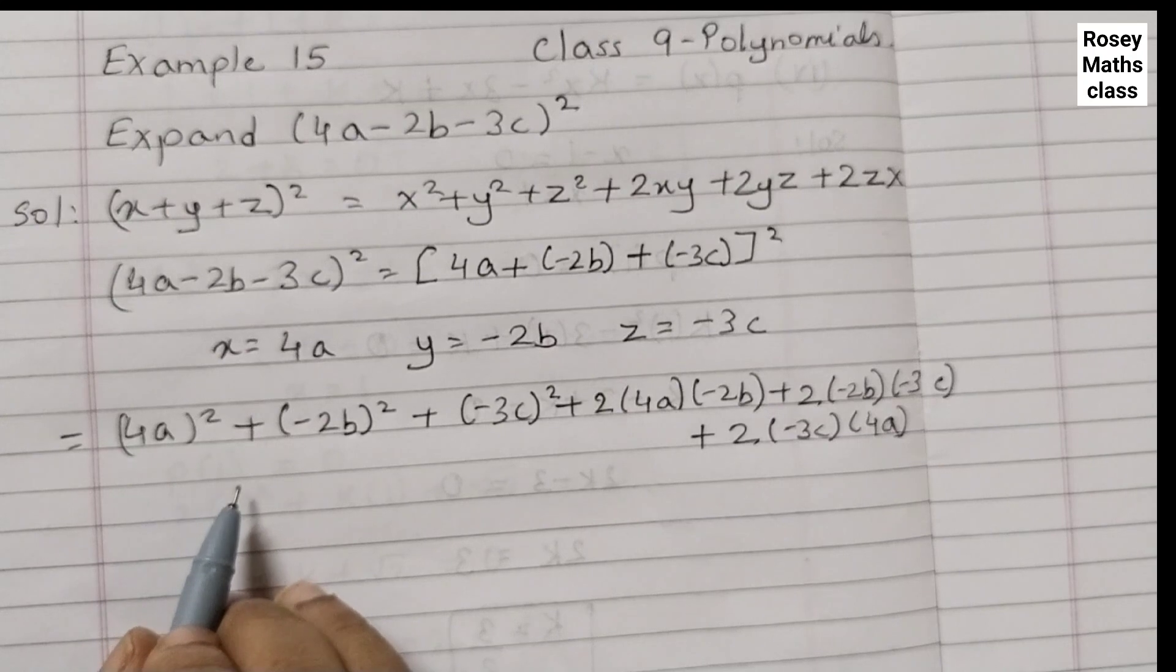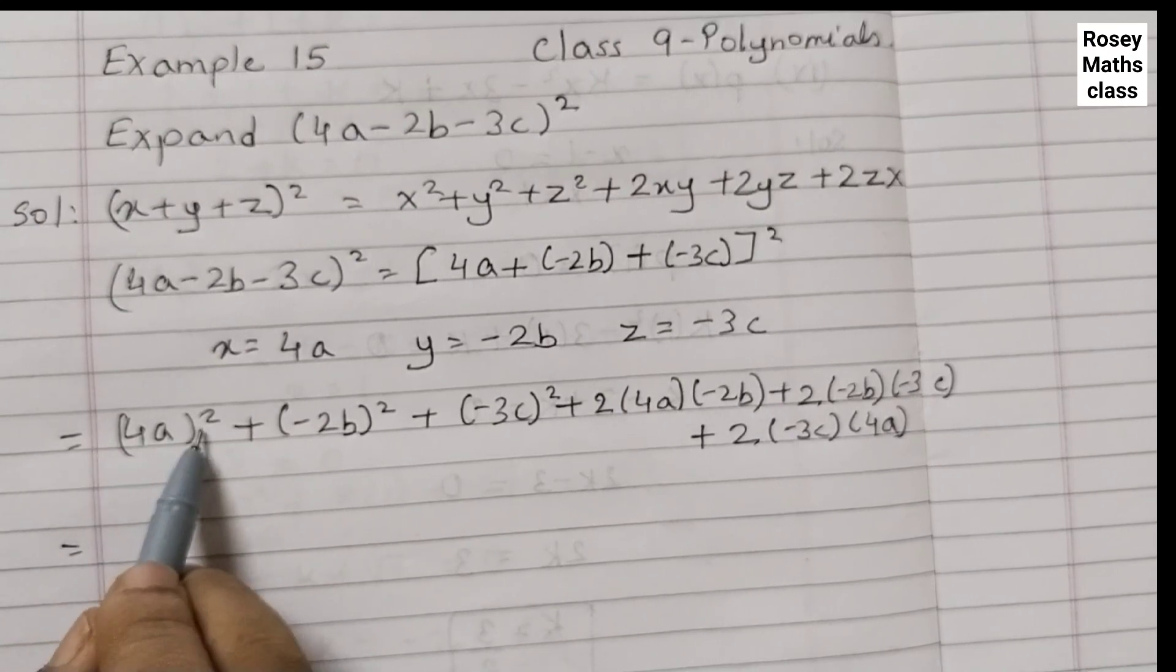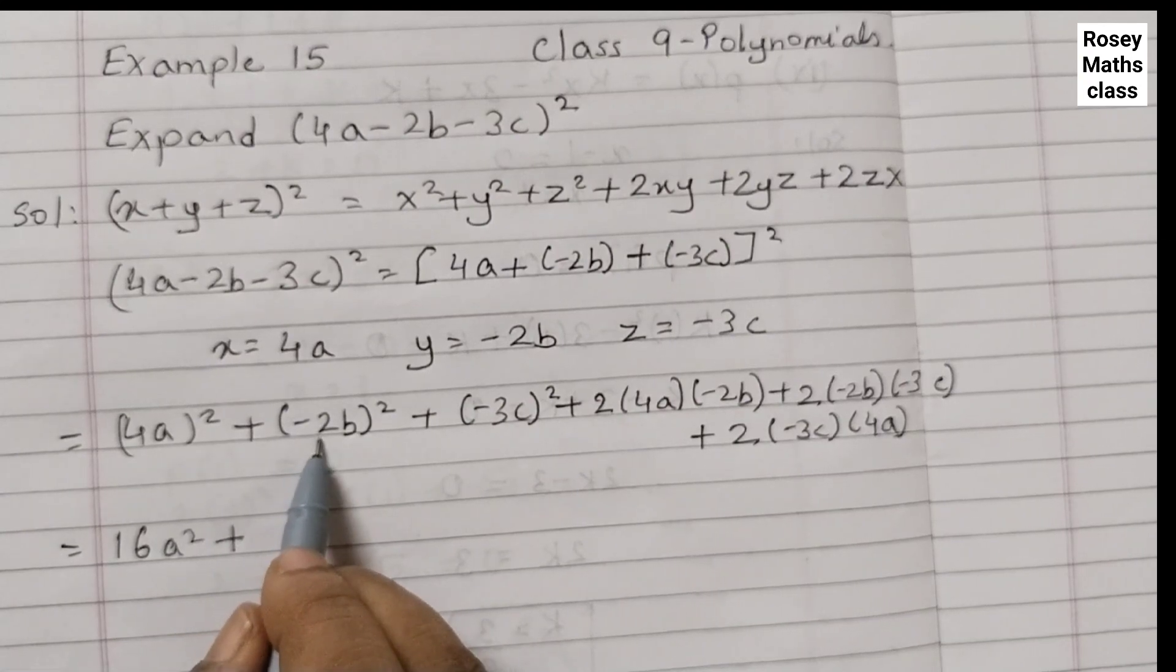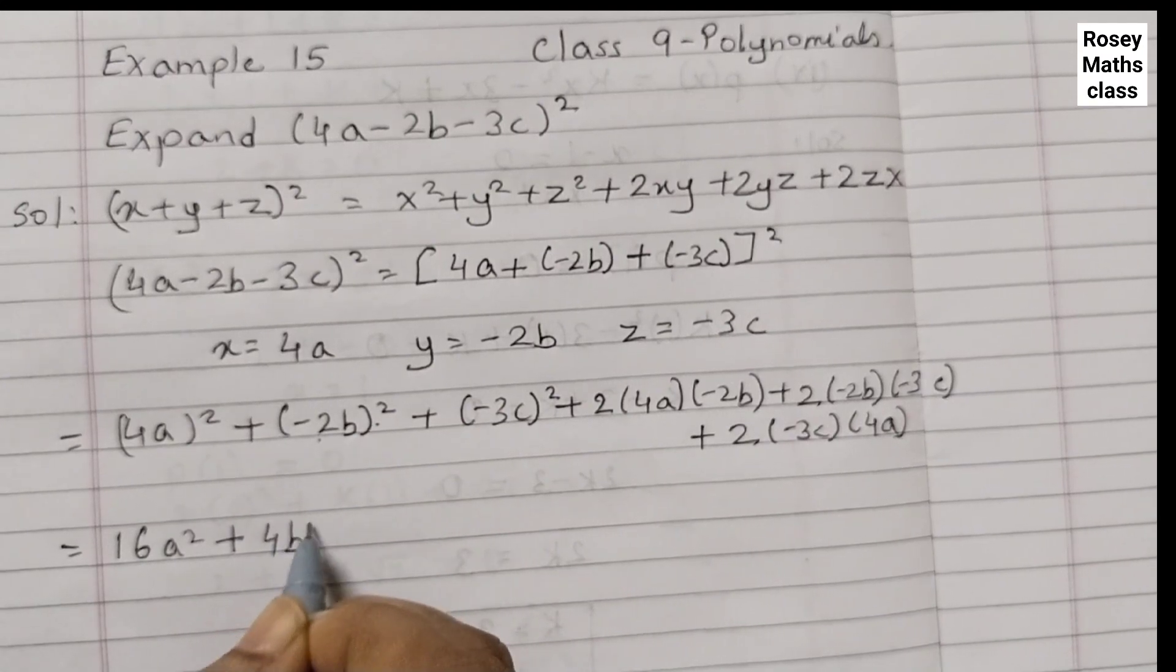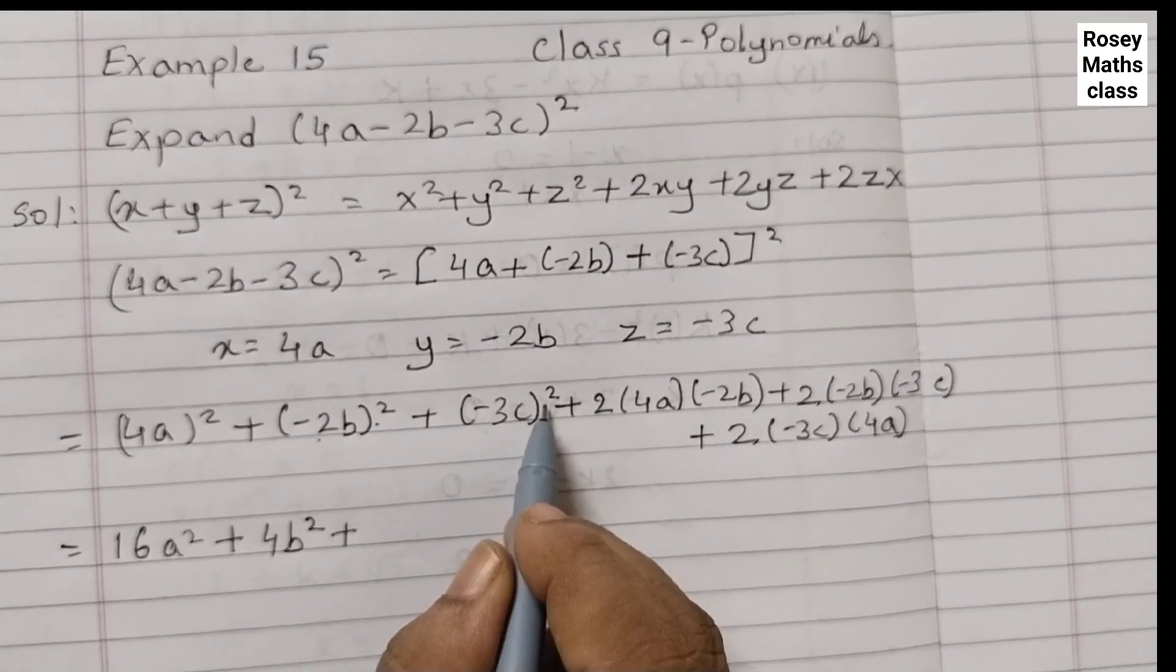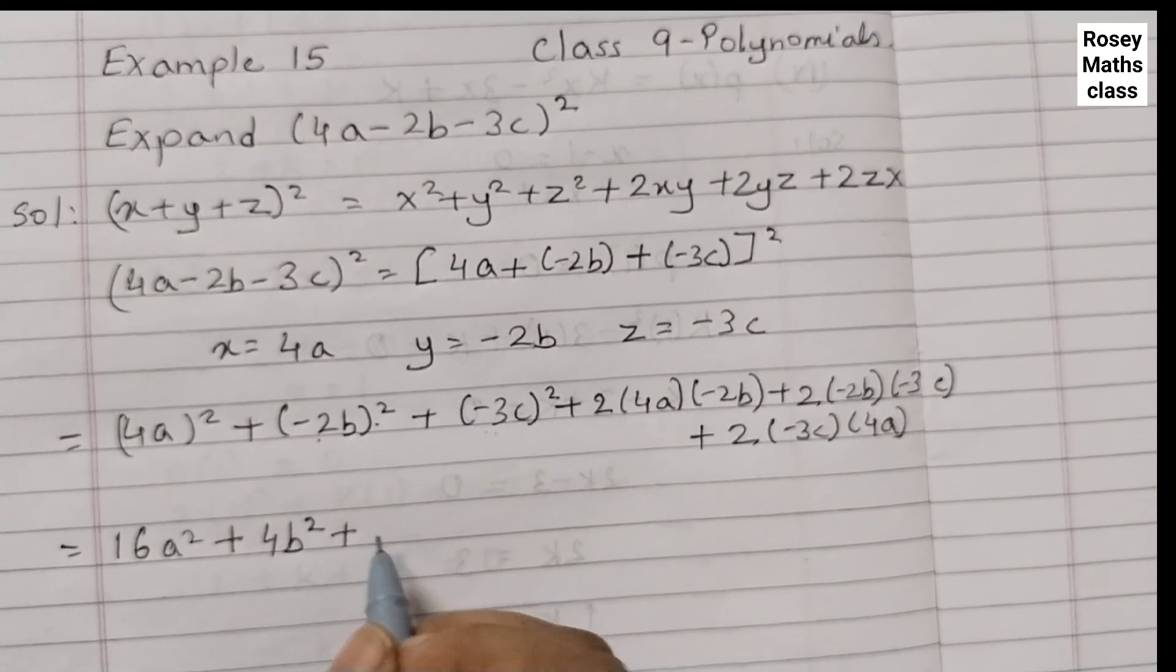We will simplify this now. 4 squared is 16a squared. A into a is a squared. Plus minus 2 squared. So minus 2 into minus 2 is 4. So 4b squared plus minus 3 squared minus 3 into minus 3 is 9. Minus minus becomes plus 3 into 3 is 9. So 9c squared plus 3 terms are there.